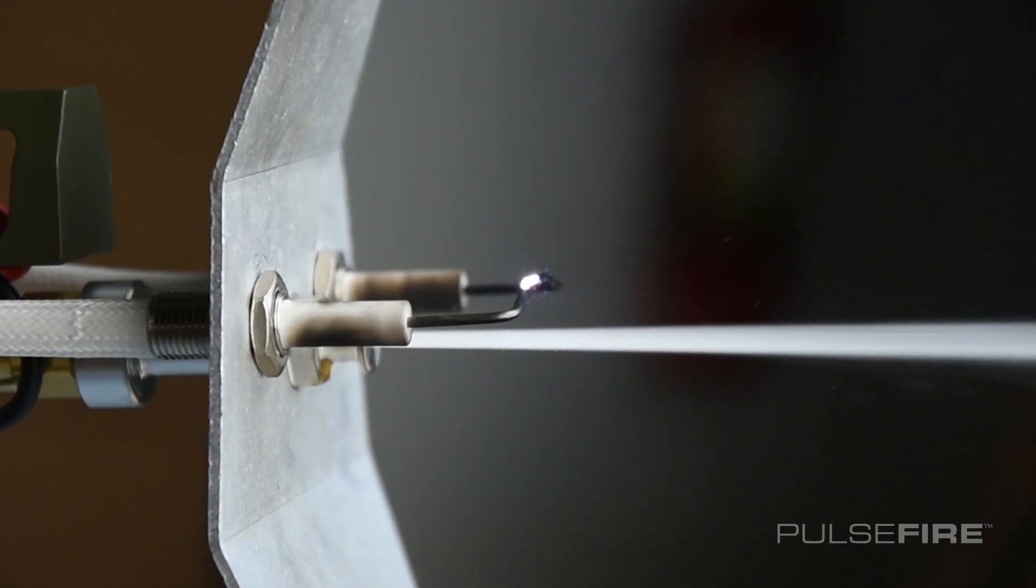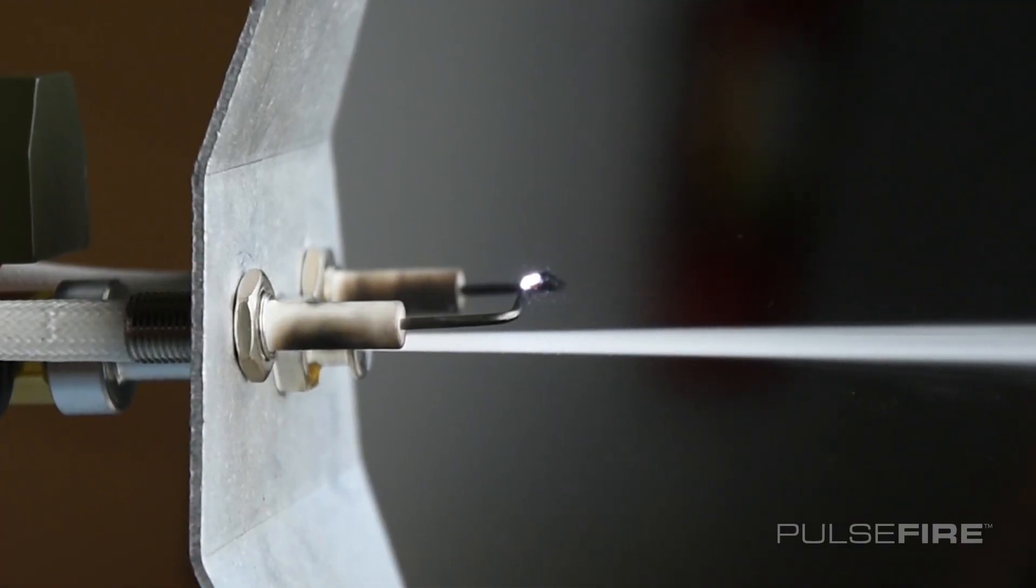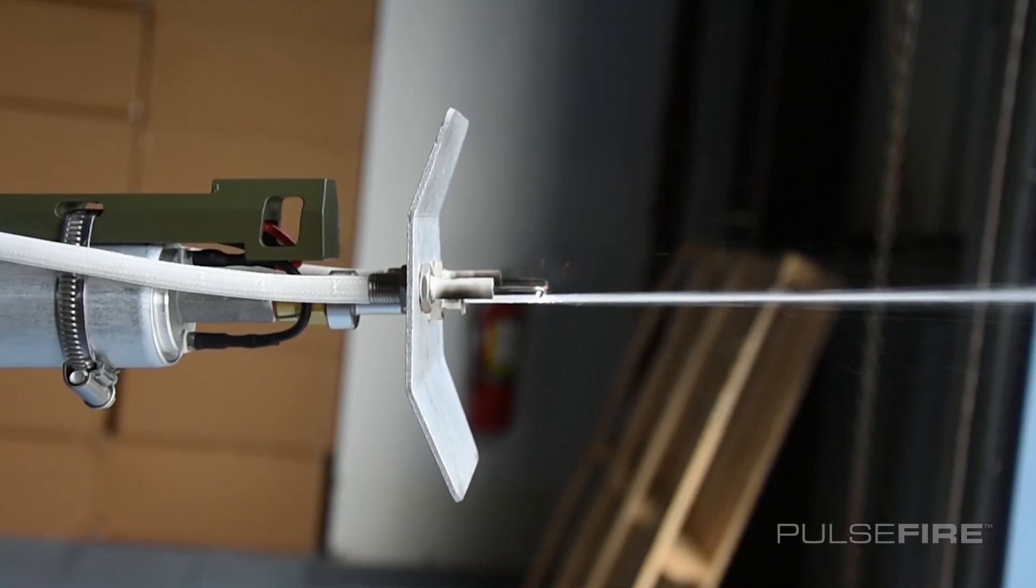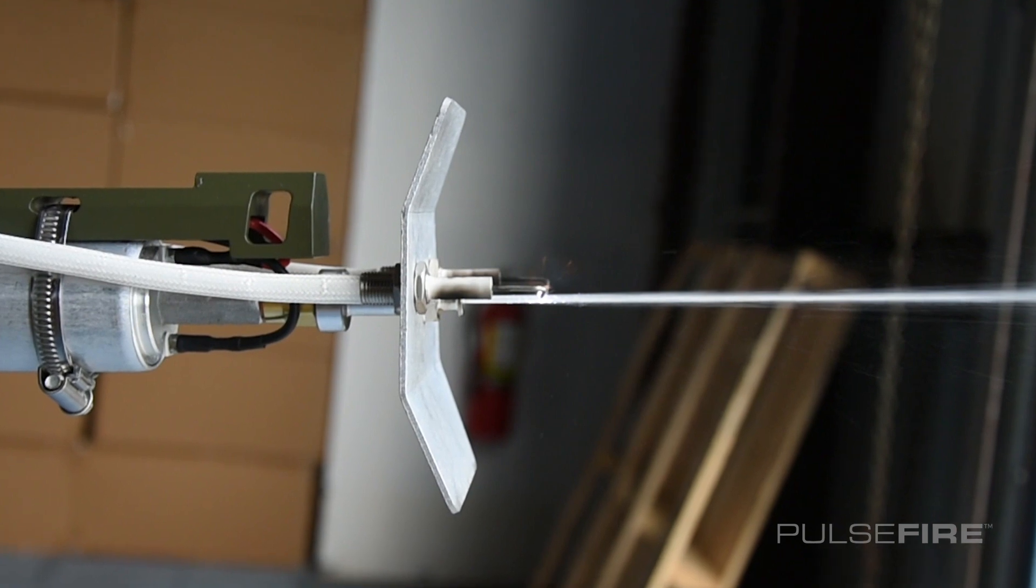If the spark happens too high, it might not reach the fuel vapor to ignite it. If the spark is too low, the fuel might drown the spark and prevent it from making the heat necessary for ignition.